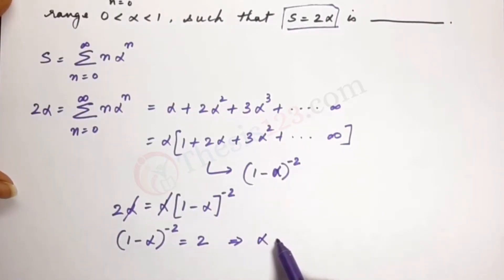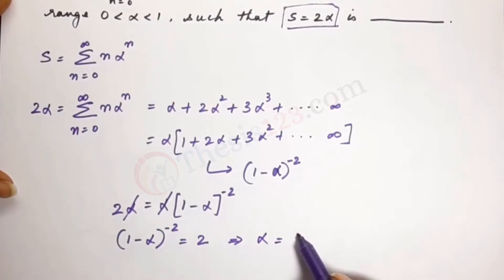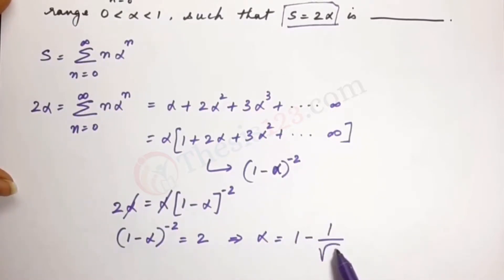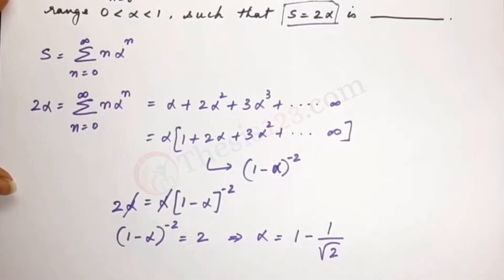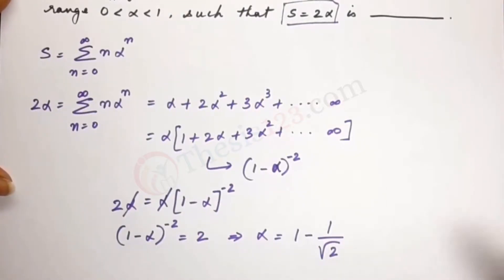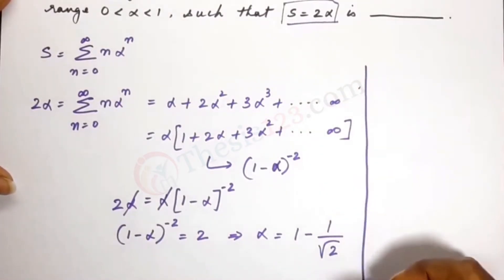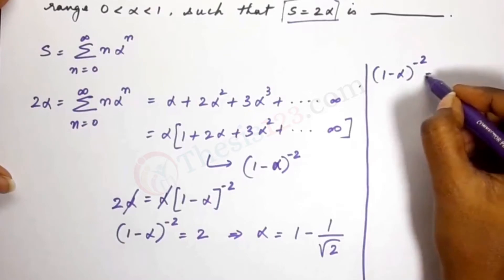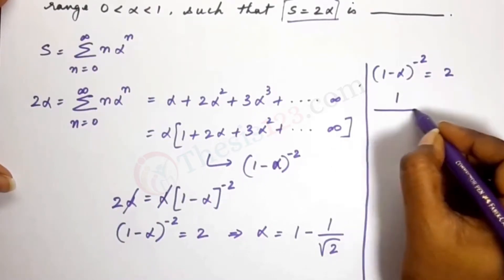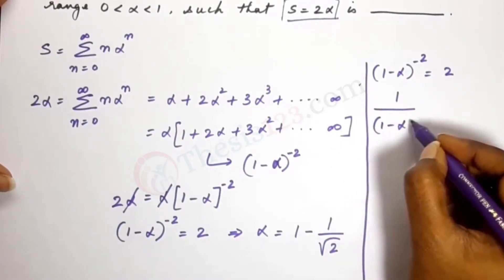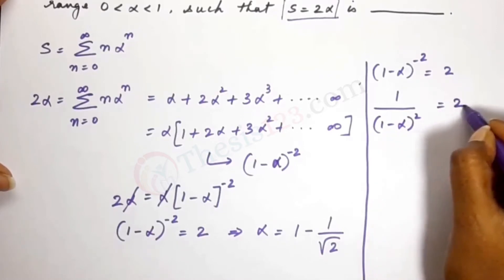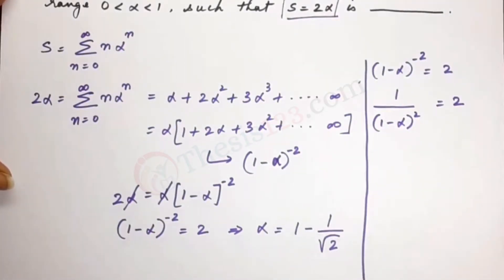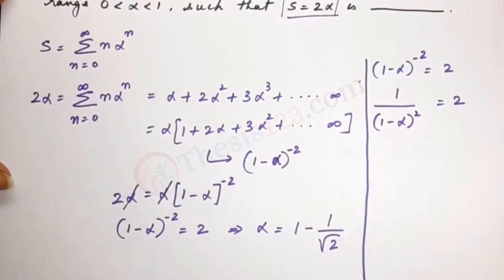Therefore alpha equals 1 minus 1 over root 2. Let me show that here. We have (1 minus alpha) to the power of minus 2 equals 2, which can be written as 1 divided by (1 minus alpha) squared equals 2. We can now expand and write this as a quadratic equation.